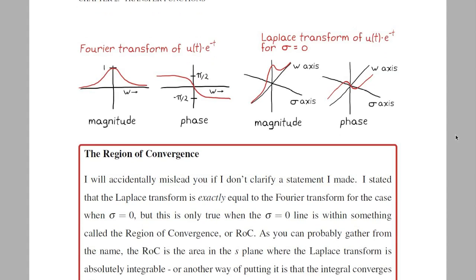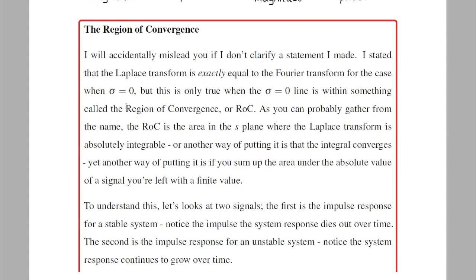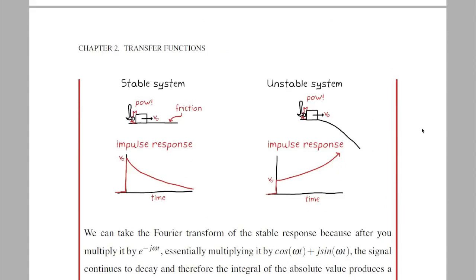I have to take a detour to briefly explain the region of convergence, otherwise I'll get in trouble for misleading you. The Laplace transform, when sigma equals 0, only equals the Fourier transform if the sigma equals 0 line is inside the region of convergence. This region is where the Laplace integral converges to a finite value, rather than summing up to infinity or just never converging at all.